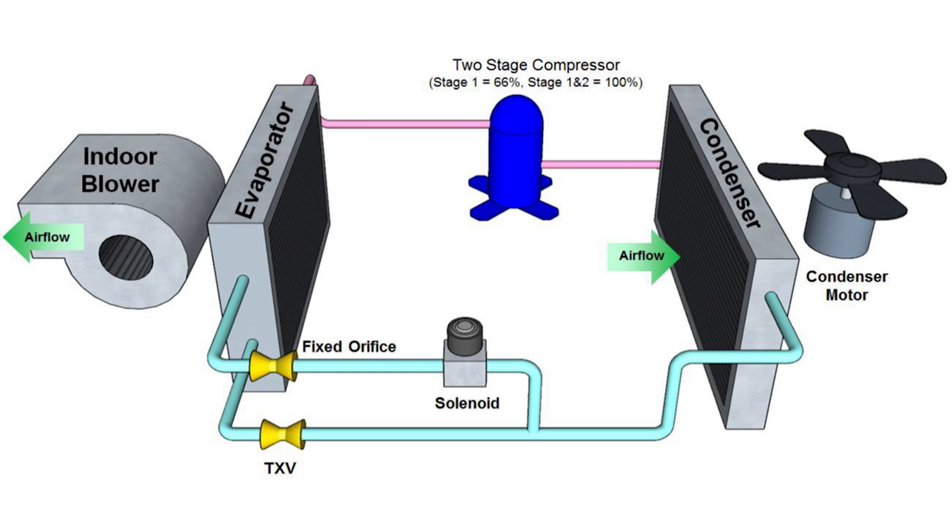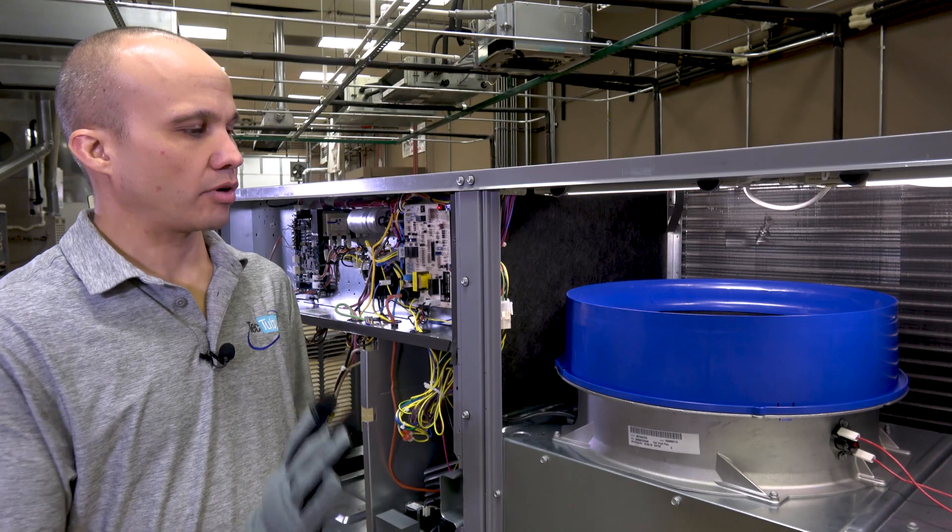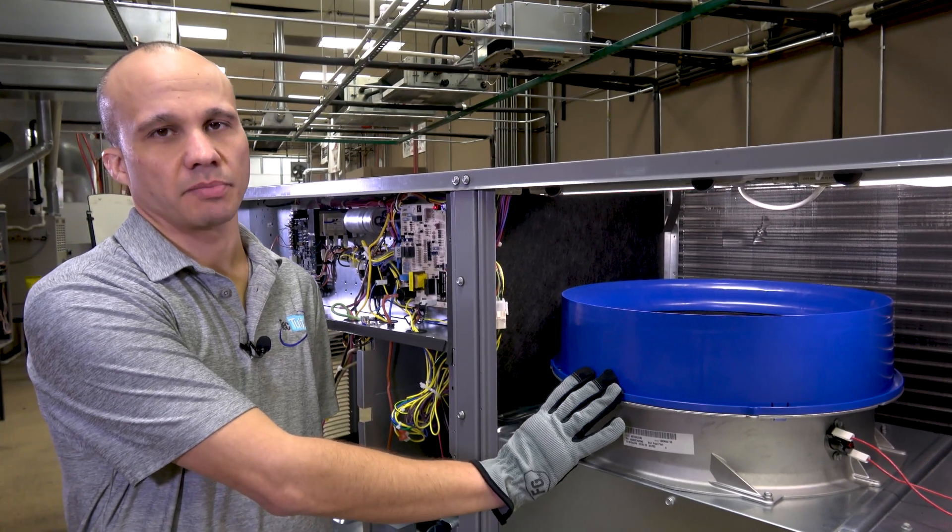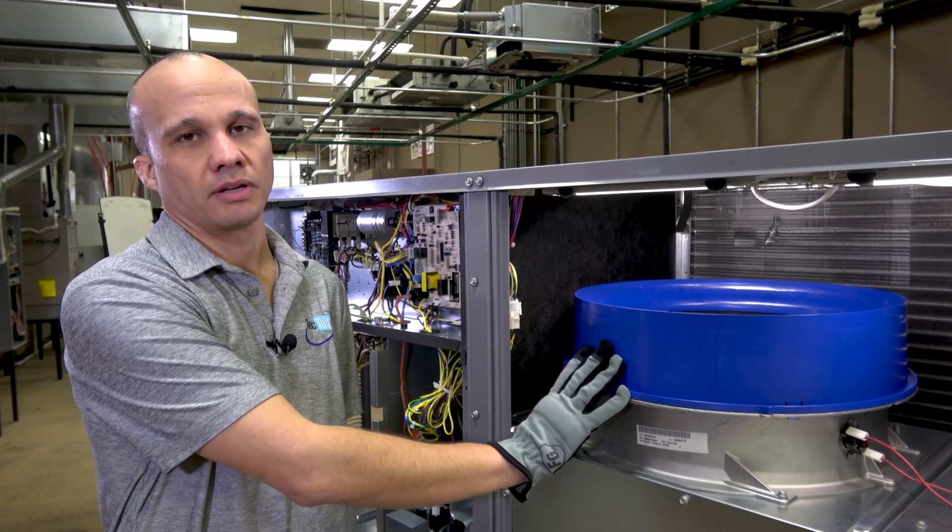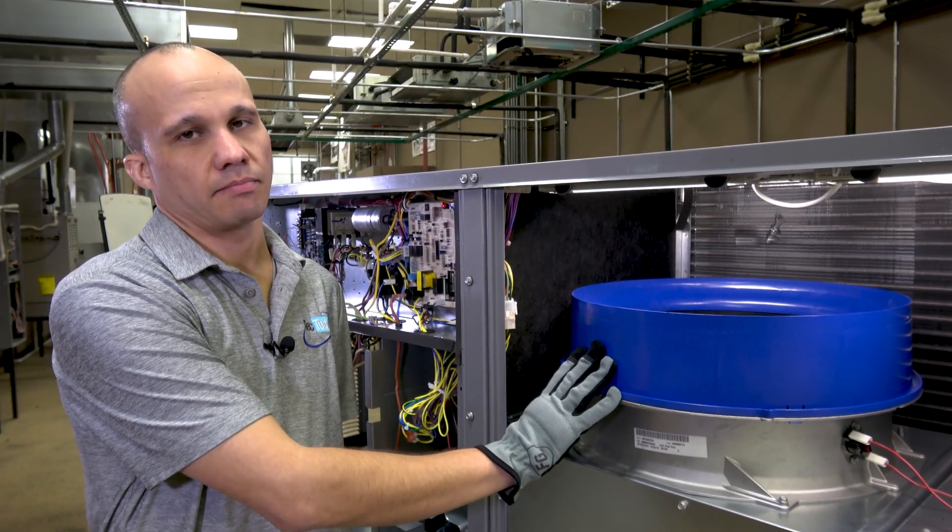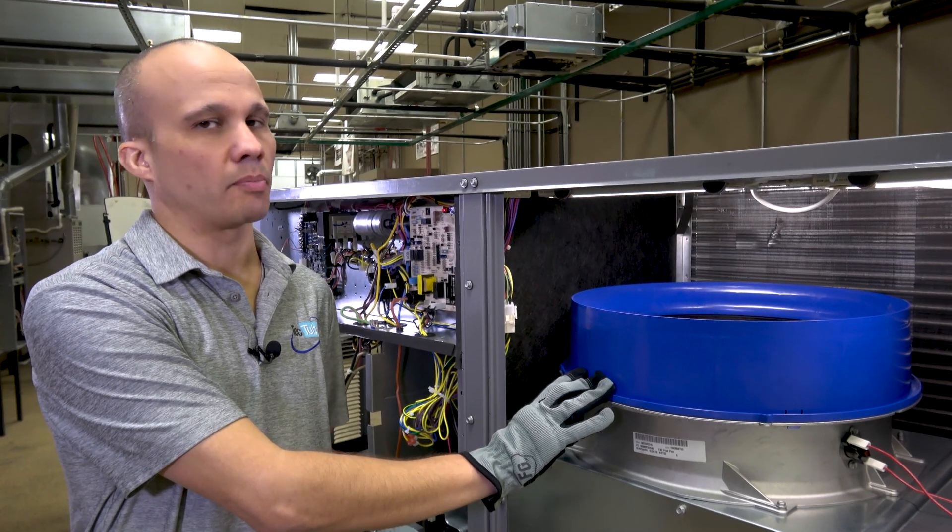Let's take a look inside. Now we've got the whole cabinet opened up. Right off the bat, the first thing you'll notice that's different is the blower motor. It's totally different than we're used to seeing inside a package rooftop unit. This is a direct drive ECM, which is not that weird to have in a rooftop unit, but it does mean we have no pulleys and no belts to mess with.